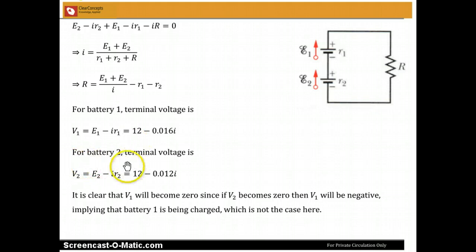For battery 2, similarly, we get V2 equals E2 minus IR2, and plugging in the values we get 12 minus 0.012i.